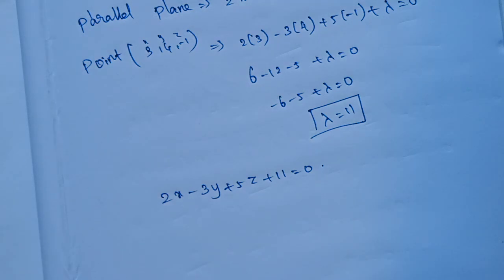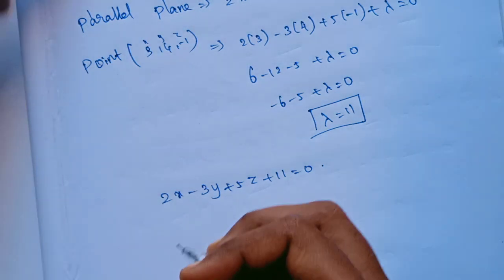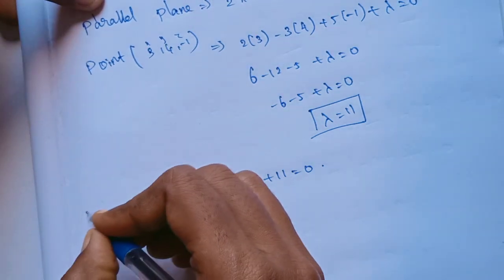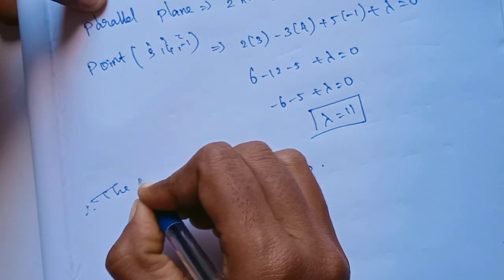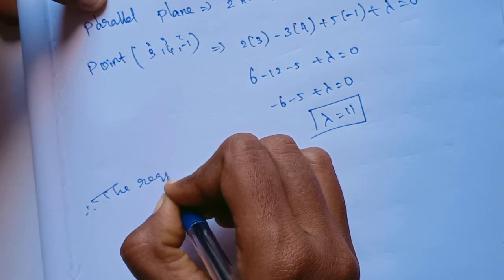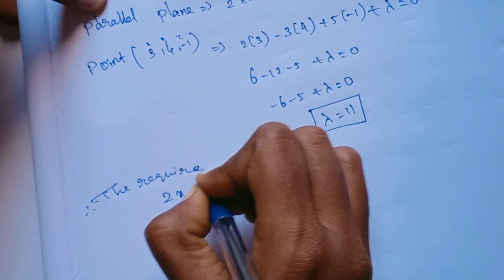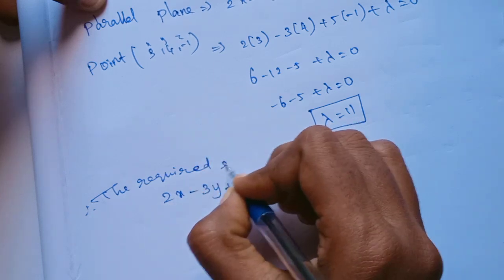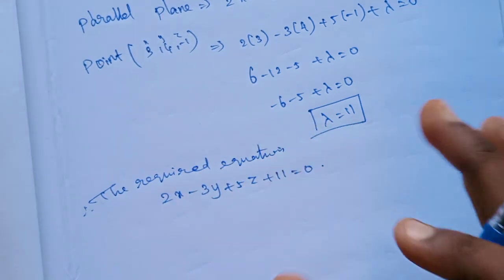Therefore the equation of the required plane is 2x minus 3y plus 5z plus 11 equals 0. This plane is parallel to the given plane 2x minus 3y plus 5z plus 7 equals 0.